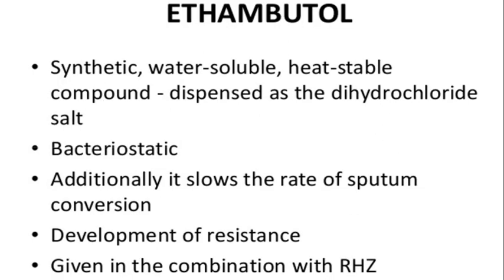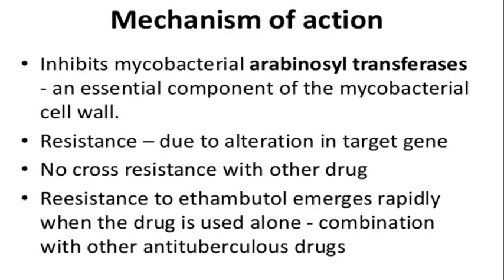Ethambutol is a first-line drug along with INH, Rifampicin, and Streptomycin. It is a synthetic, water-soluble, heat-stable compound dispensed as the dihydrochloride salt. Ethambutol is bacteriostatic, whereas INH and Rifampicin are bactericidal. It slows the rate of sputum conversion and development of resistance when given in combination. Mechanism of action: it inhibits mycobacterial arabinosyl transferase, an essential component of the mycobacterial cell wall. Resistance is due to alteration in the target gene.